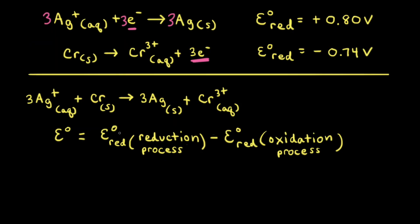There's another way to calculate the standard potential for this redox reaction that only uses standard reduction potentials. To calculate the standard potential, we take the standard reduction potential for the reduction process and subtract the standard reduction potential for the oxidation process.